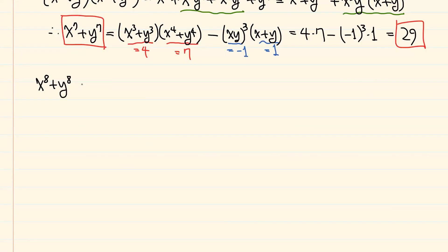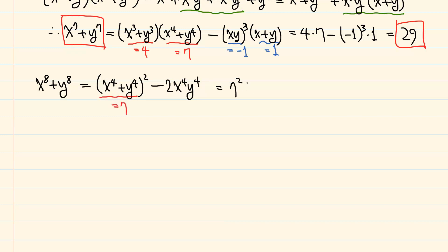For the power of 8, it is x to the power of 4 plus y to the power of 4 squared minus 2x to the 4th y to the 4th, so it is 7 squared minus 2 times minus 1 to the power of 4, which gives 47.